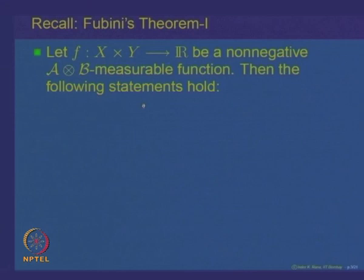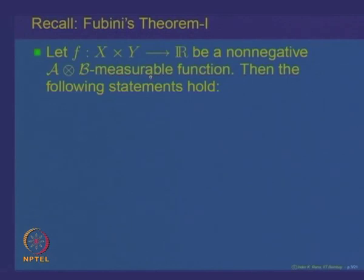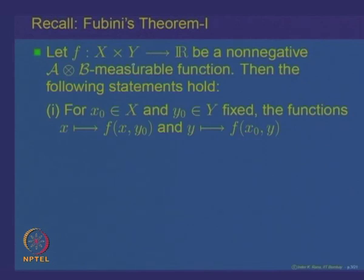We first proved what is called Fubini's theorem 1, which said that suppose f is a function defined on the product space X cross Y taking values in the real line. Suppose this function f is non-negative and measurable with respect to the product sigma algebra A times B. Then the following statements hold: if we fix one of the variables, say x-naught in X or y-naught in Y, then with respect to the other variable these functions become non-negative measurable with respect to the corresponding sigma algebras.